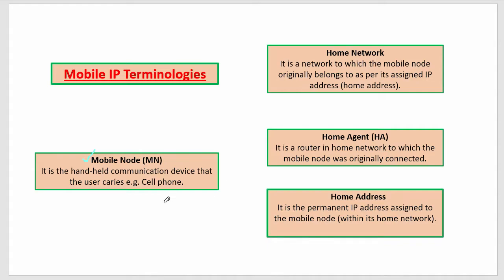Next is Home Network — the network to which the mobile node originally belongs, as per its assigned IP address. Originally, the network from which we are belonging, which router we come from, that is the home network. Home Agent is the router where our mobile is originally connected.